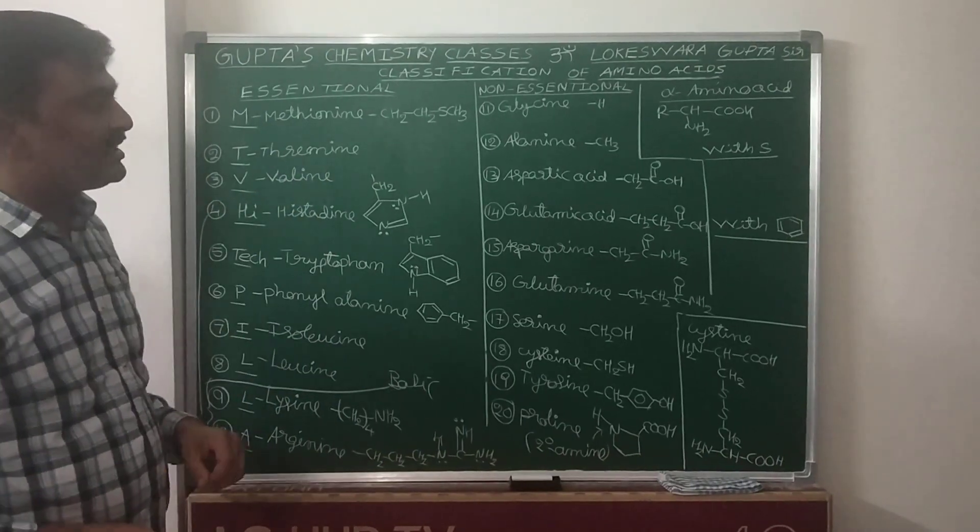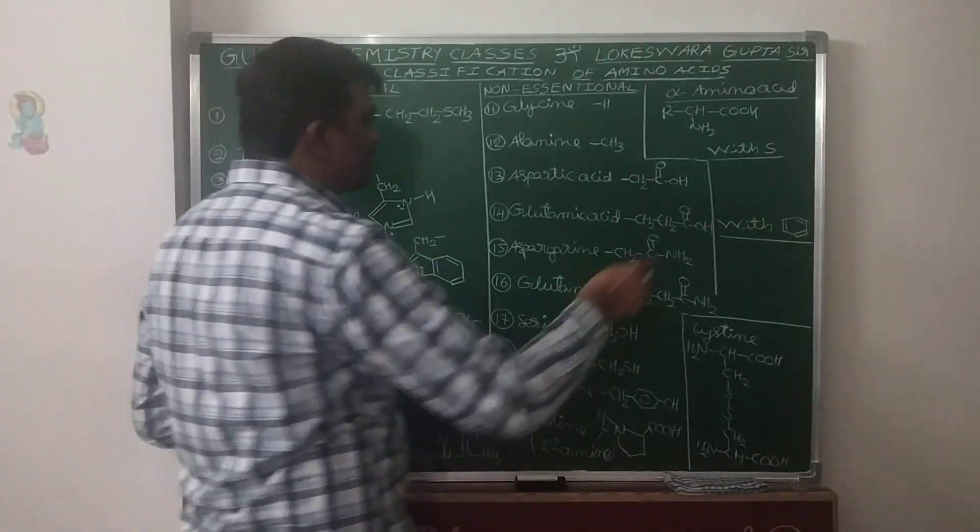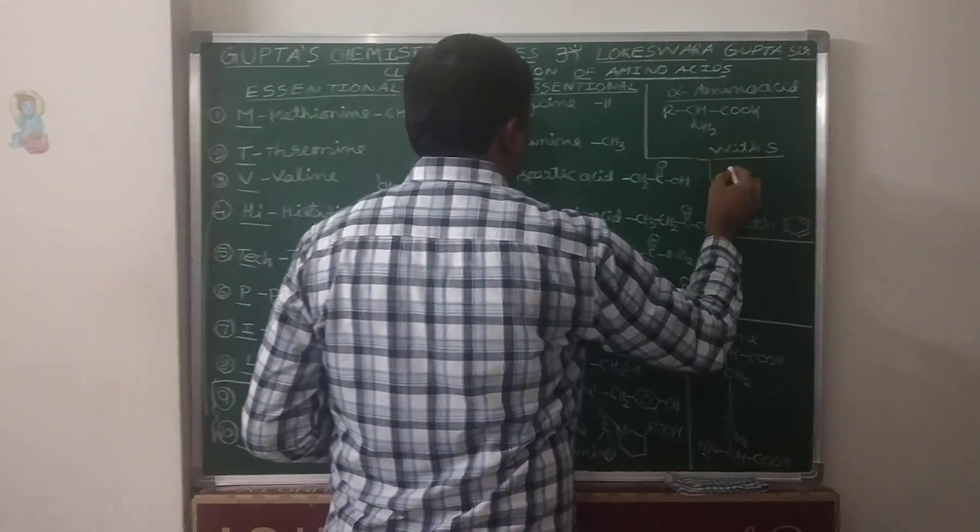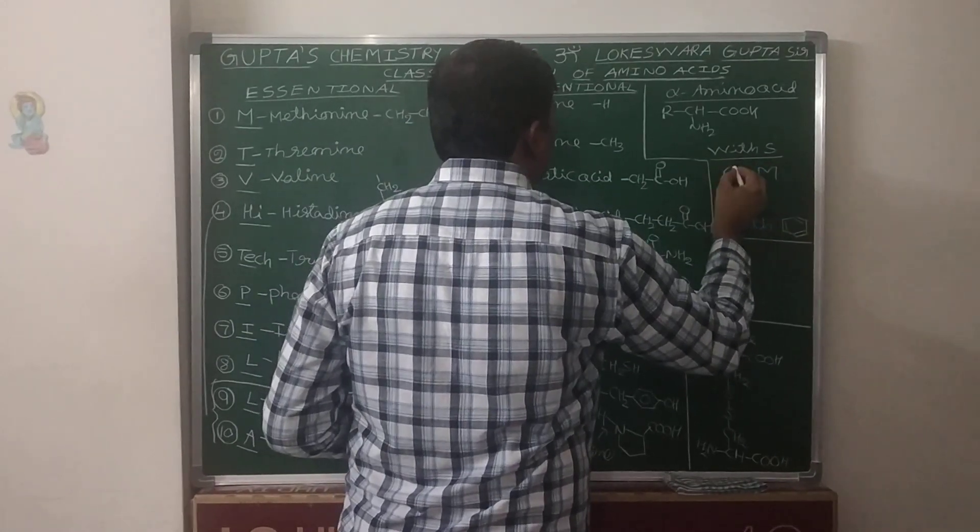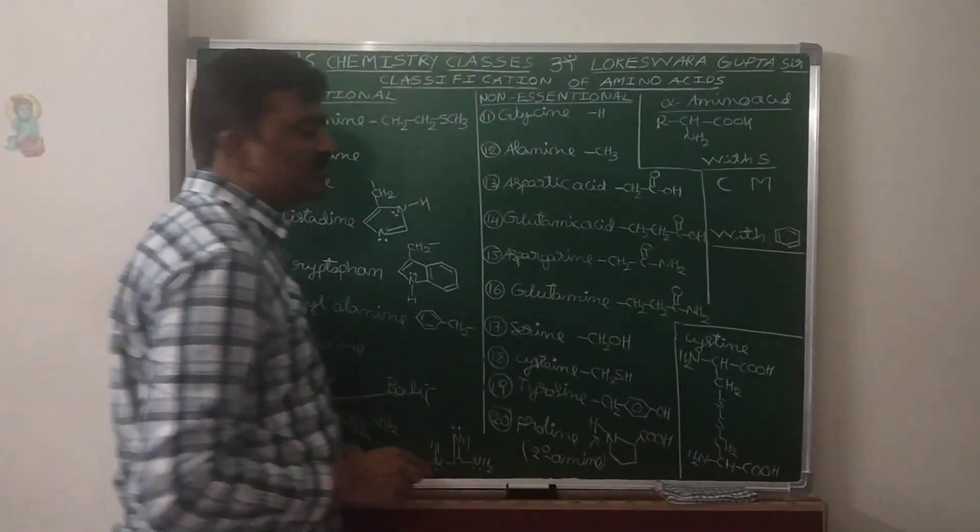Now, what are the alpha amino acids with sulfur? Two are there. You can remember those two with the shortcut CM, Chief Minister. What are those two?